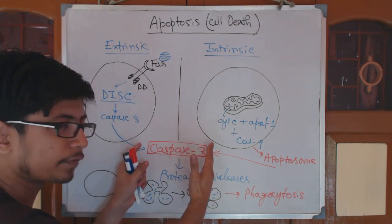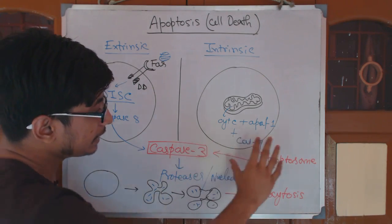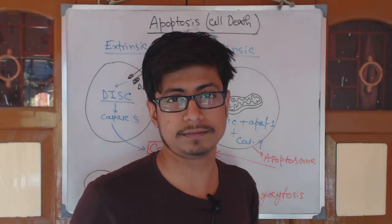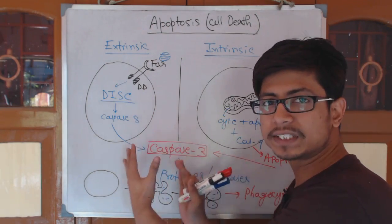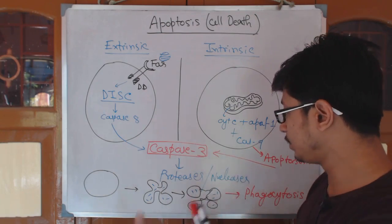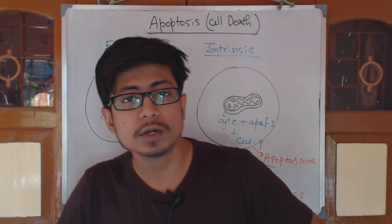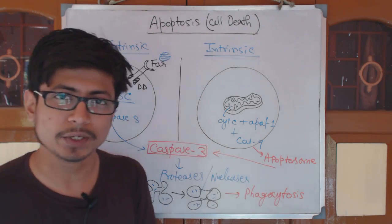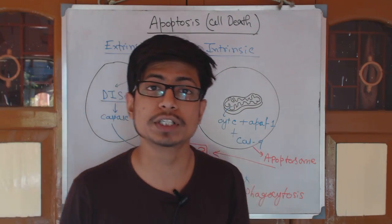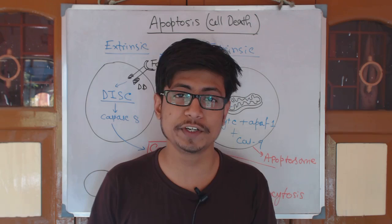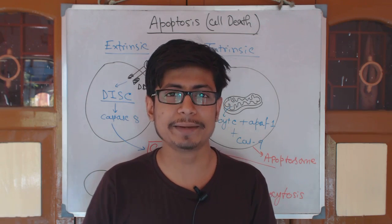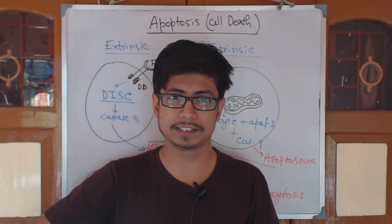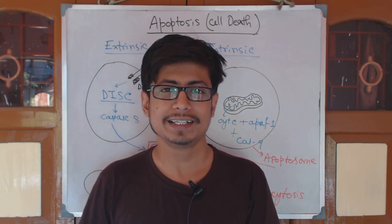So you see, ultimately the events come from caspase 3. In the intrinsic pathway, the apoptosome is formed; in the extrinsic pathway, DISC is formed — but both ultimately activate caspase 3, which mediates the rest: inducing proteases and nucleases that cleave DNA, proteins, and RNA, and finally the cell dies. This is the big picture overview of apoptosis, or programmed cell death. If you liked this video, please hit the like button and subscribe to the channel. Thank you.